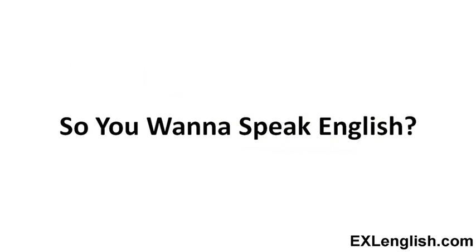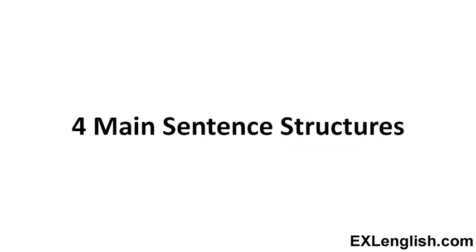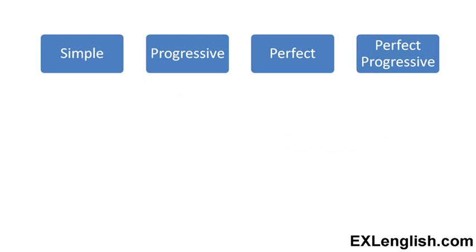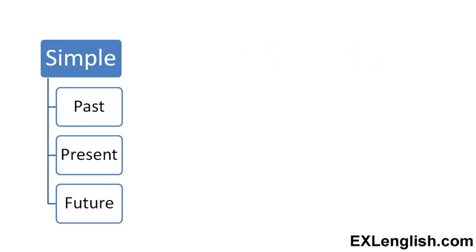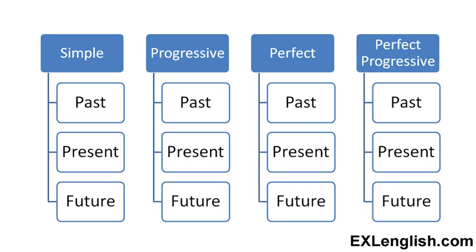So you want to speak English? Well, there are four main sentence structures in the English language that we use to communicate. These are the simple, progressive, perfect, and the perfect progressive tenses. You can take any one of those and break them down into three different areas: the past, present, and future. So you have the simple past, the simple present, and the simple future — or you can do that with any one of these main grammar structures. In a future video we'll cover how those grammar tenses are made in each of those different tenses.